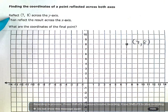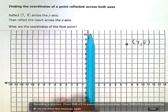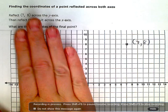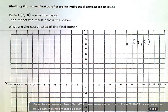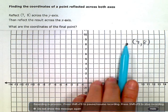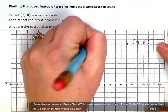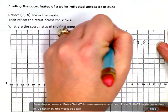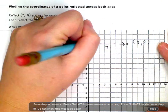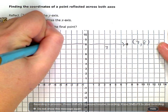Now I'm going to reflect it across the y-axis. That's this axis, or this line right here. So I'm going to take this point and flip it over onto the other side of the y-axis. It's not going to change height. It's going to stay right along this 8 line. But instead of being 7 units this way, it's going to flip over to the other side and be 7 units this direction.